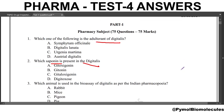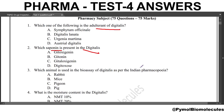Next question: which animal is used in the bioassay of digitalis as per the Indian Pharmacopoeia? The answer is pigeon. Guinea pig and pigeon are both used in the bioassay of digitalis.